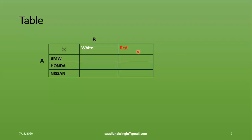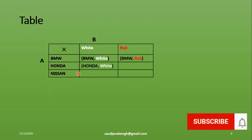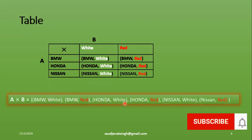Similarly, A cross B can be found using the tabulation method, which is also very easy. Set A — the company names — are listed on the left side of the table, and set B — the colors — are listed across the top. The first element is taken from set A and the second from set B, giving ordered pairs like BMW-white, BMW-red, and so on. The result, A cross B, is a single set of all possible ordered pairs.